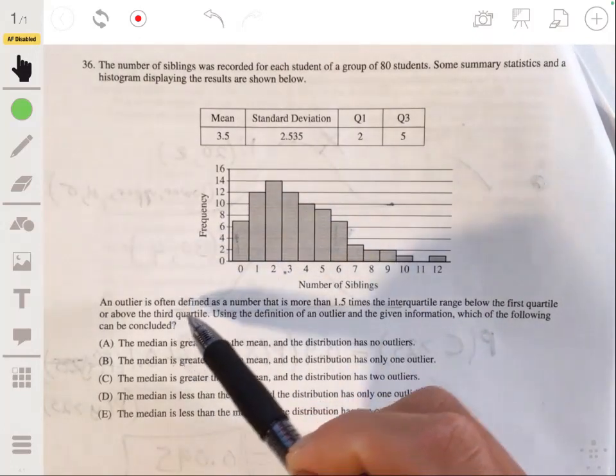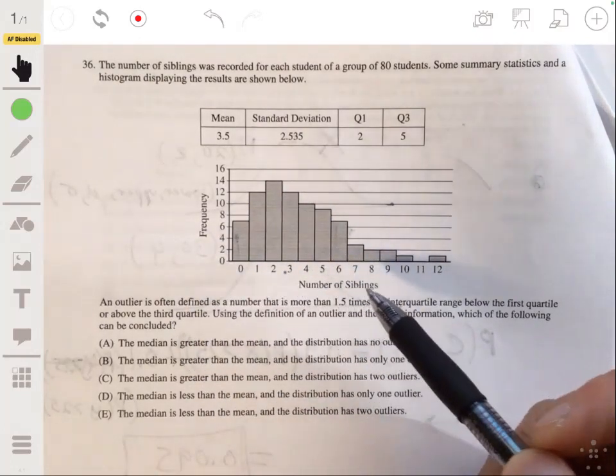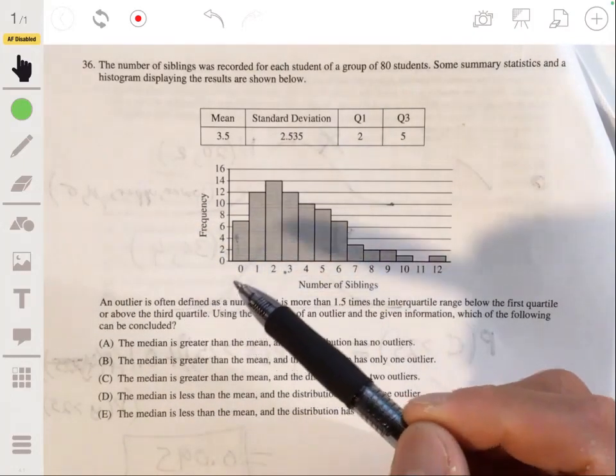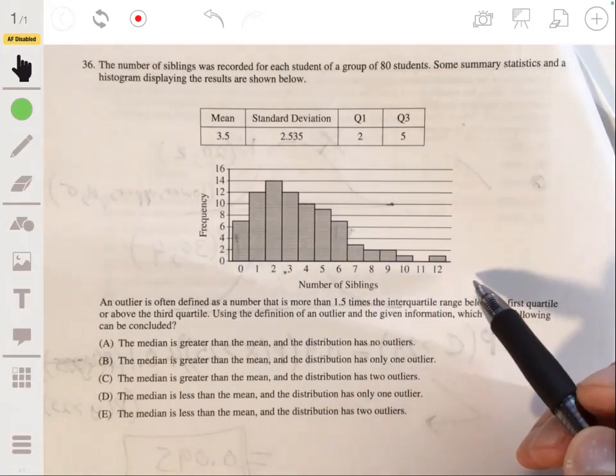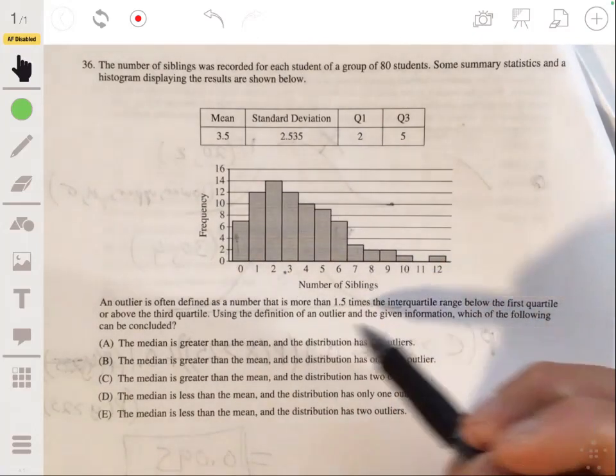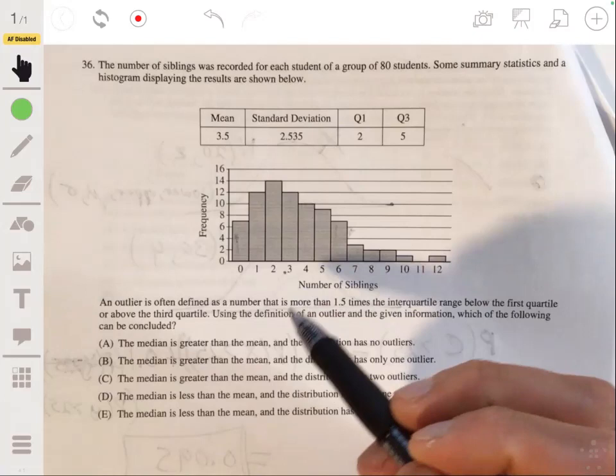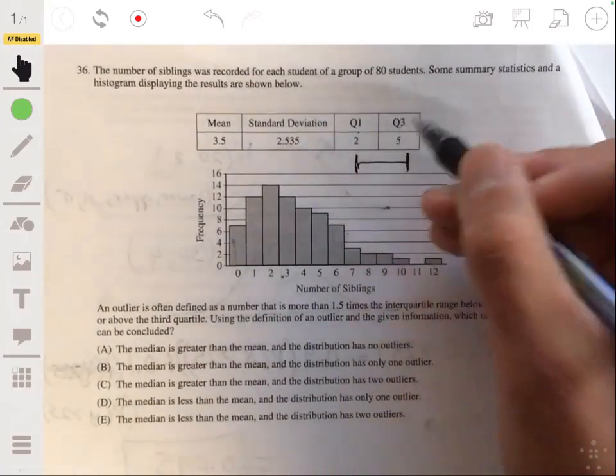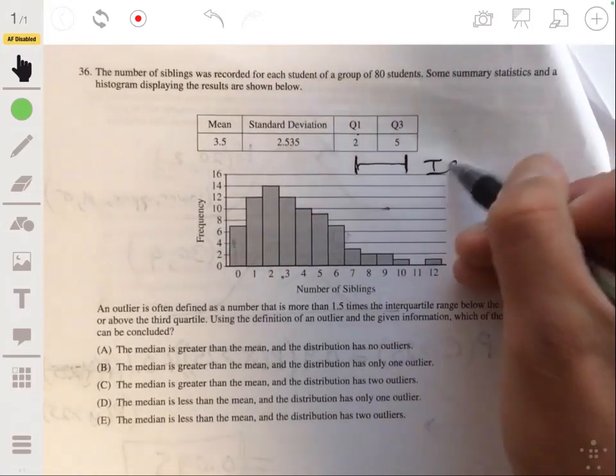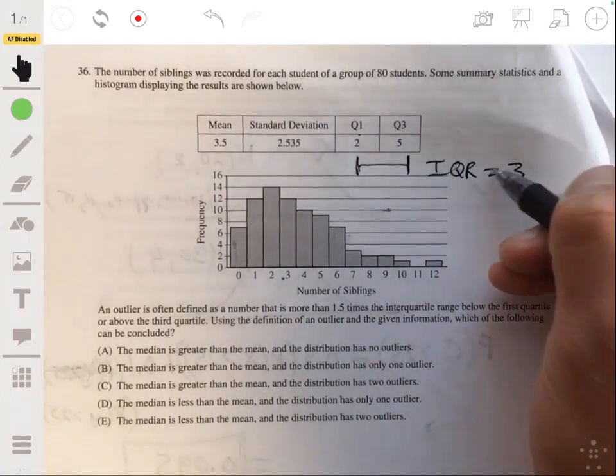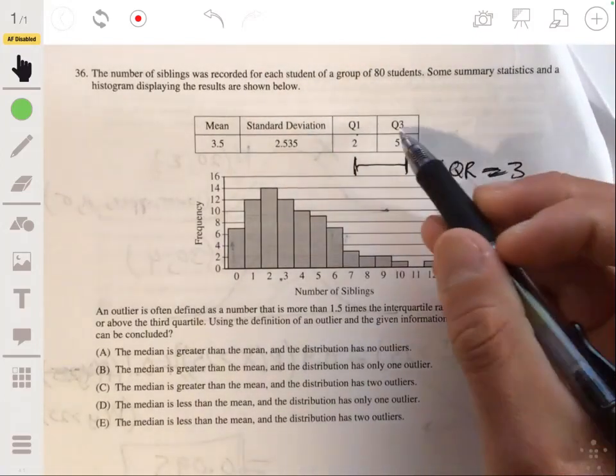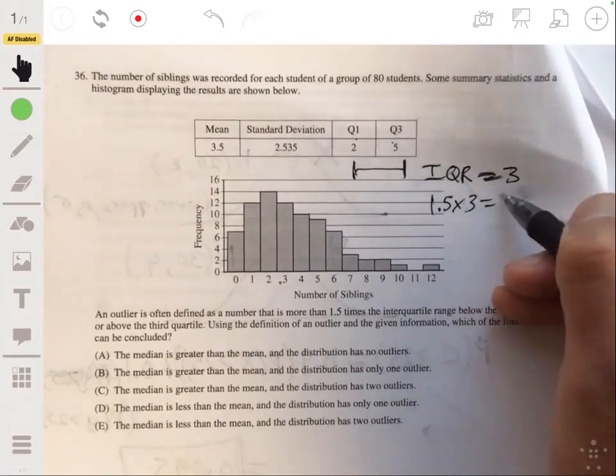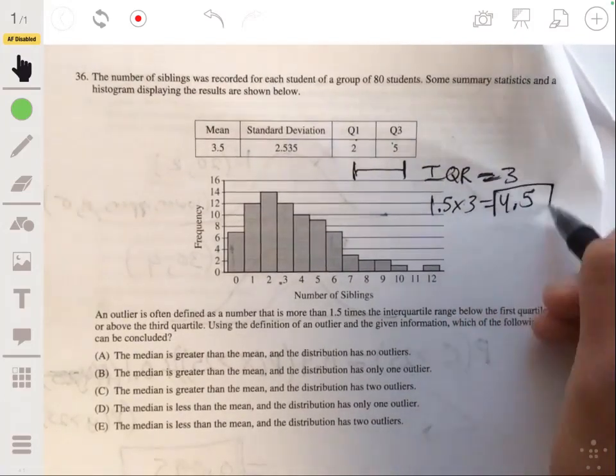Okay, so we're told that an outlier is defined as a number that is more than 1.5 times the IQR below the first quartile or above the third quartile. So using this definition of an outlier and this given info, which of the following can be concluded? Let's first figure out what the IQR is. The IQR is the distance that Q1 and Q3 are from each other, so the IQR would be 3. And then to find an outlier, you do 1.5 times 3, and that'll give you 4.5.